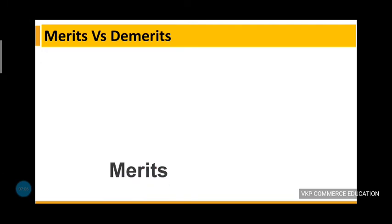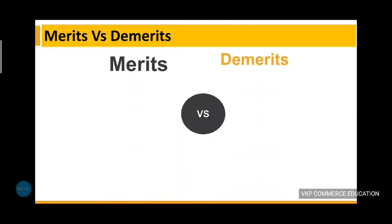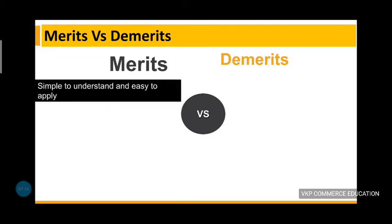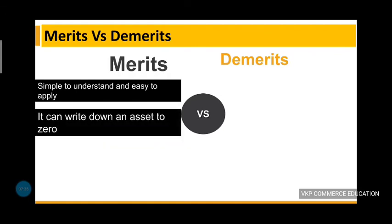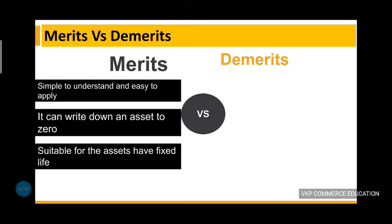Now let us discuss the merits of the straight line method, also called the fixed installment method. First, it is very easy to understand and simple to apply. Second, it can write down an asset to zero. Third, it is suitable for assets that have a fixed life.